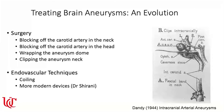When it comes to treating brain aneurysms, there's certainly been an evolution over the years. Initially, treatment involved blocking off the carotid artery in the neck or head, then transitioning to treating the aneurysm itself — first by wrapping the dome, then clipping the neck of the aneurysm. Eventually we moved toward endovascular techniques such as coiling and more modern devices that Dr. Shirani will describe.